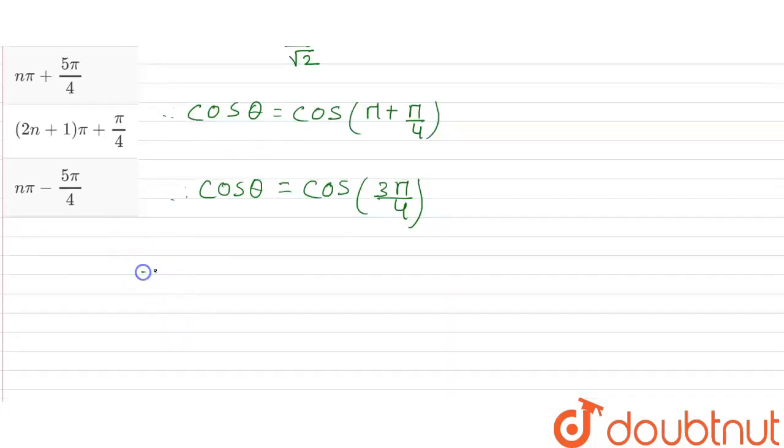Therefore, theta equals 2n pi plus minus 3 pi by 4. So theta is the general value where n equals 0, plus minus 1, plus minus 2, plus minus 3, and continues that way.